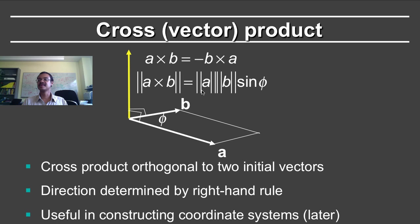The magnitude is given by the magnitude of A, magnitude of B, and instead of the cosine in the dot product, the sine of phi. But the cross product also has a vector direction, which is given by the right hand rule.